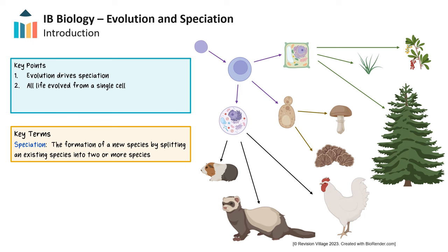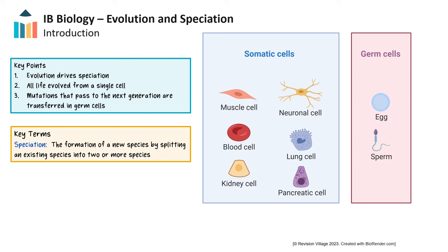In order for genetic changes or mutations to be passed down into the next generation, the mutation must occur in the germ cells or sex cells that transfer the genetic information to the next generation. Any genetic change that occurs in a somatic or body cell will be lost when the organism dies.